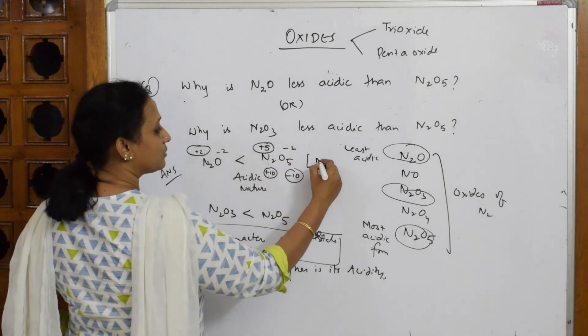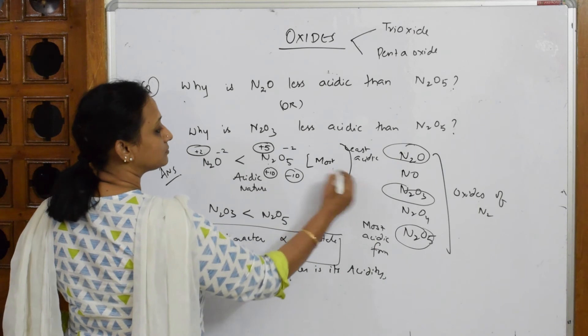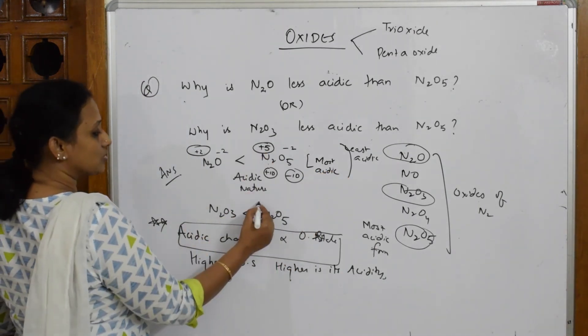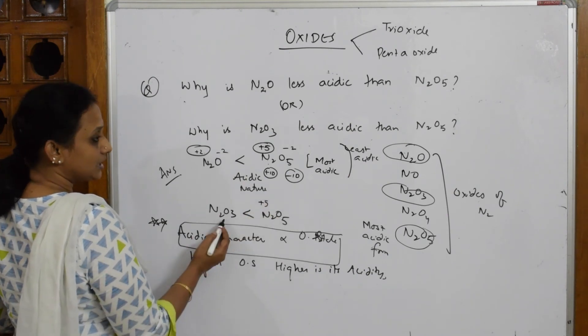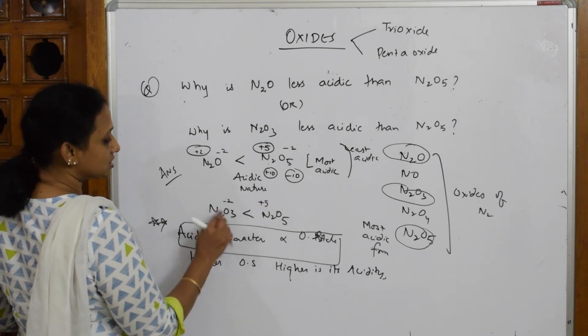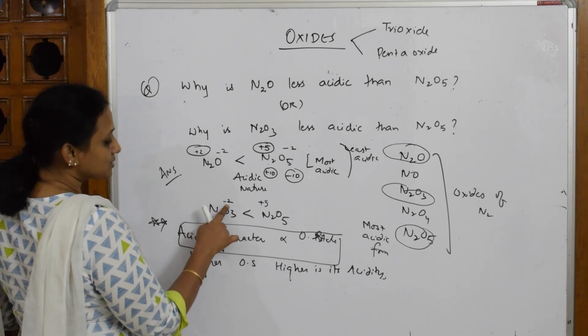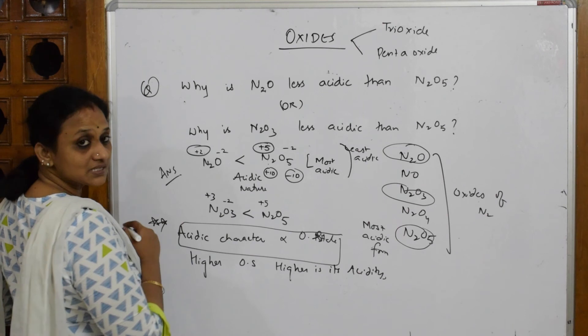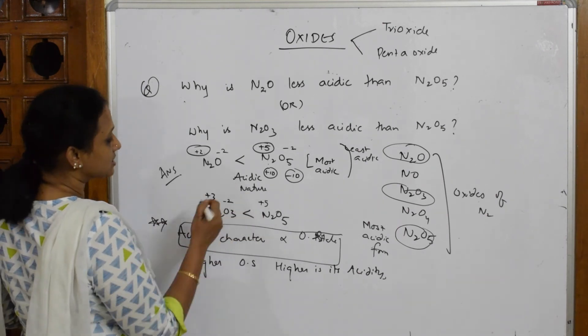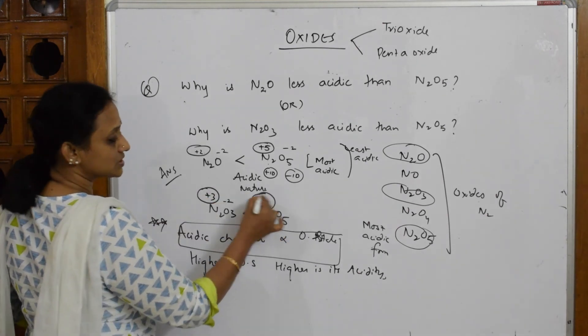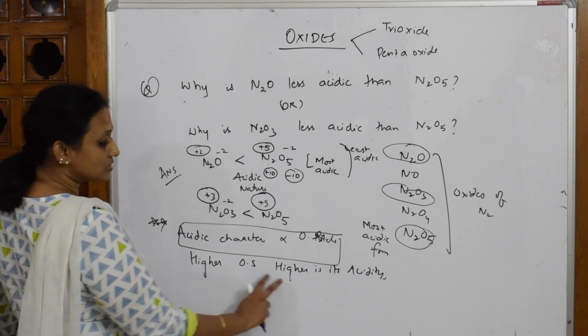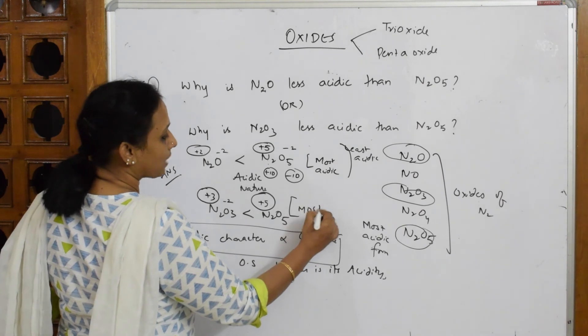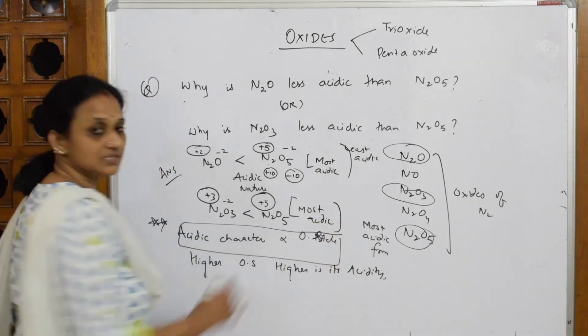Let's compare again. The same thing: oxidation state of N2O5 is plus 5. In N2O3, oxygen is 3 times minus 2, that's minus 6. To compensate, nitrogen should be 2 times 3 plus, so plus 6, giving oxidation state plus 3. Here the oxidation state is plus 3, here it is plus 5. Higher the oxidation state, higher is its acidity, so this is most acidic. That's it.